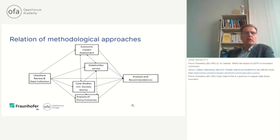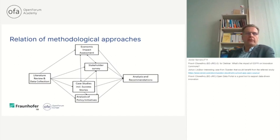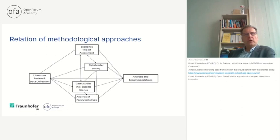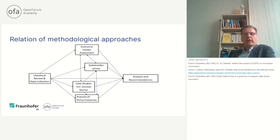First, that was the overall approach. We looked at the literature also on open innovation as maybe the bigger term, and we also collected data and then we did different things. I will talk about just the economic impact assessment. There were also case studies by Mirko Boehm and Andrew Katz, and we conducted a stakeholder survey to validate the assessment. We derived more of the econometric exercises, and Sivan and Paula did the analysis of the policy industry — all of which went into the recommendations.